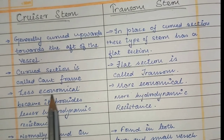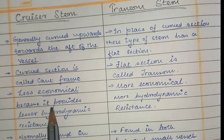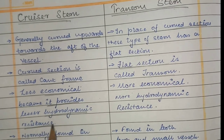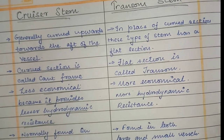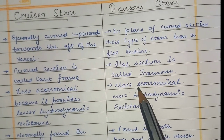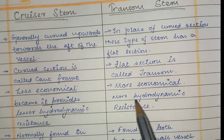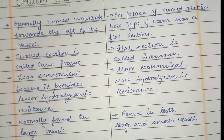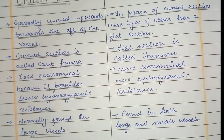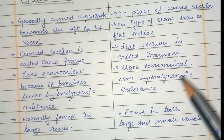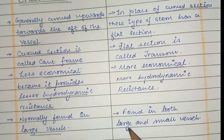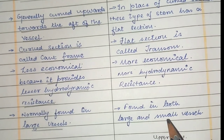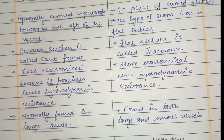Cruiser's turn is less economical because it provides less hydrodynamic resistance, whereas the transom's turn is more economical. Cruiser's turn is normally found on large vessels, whereas transom's turn is found in both large vessels and small vessels.